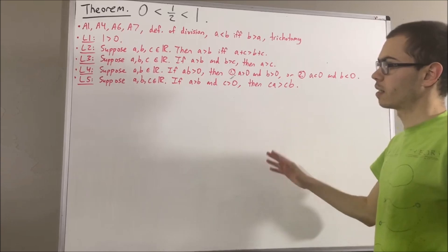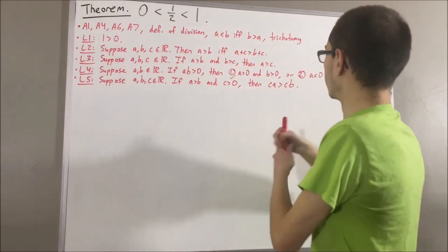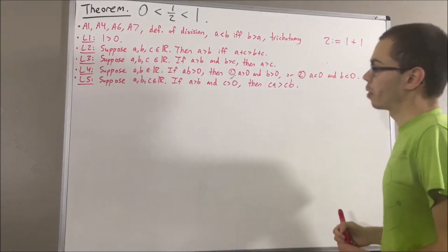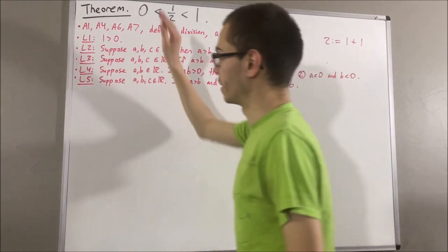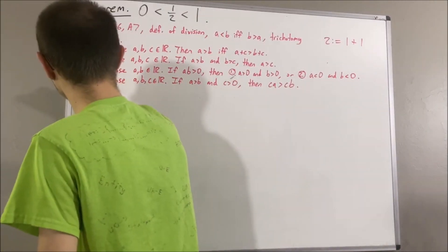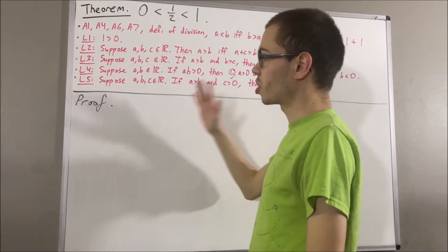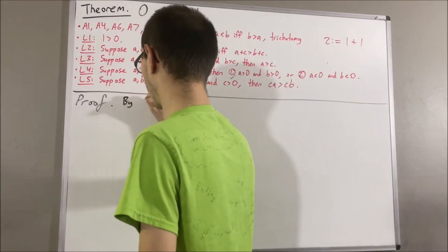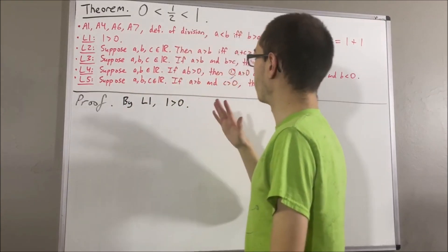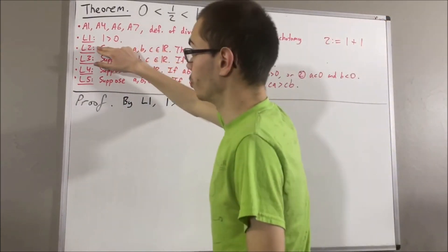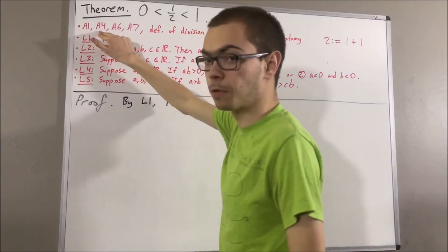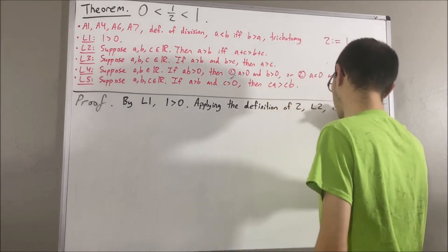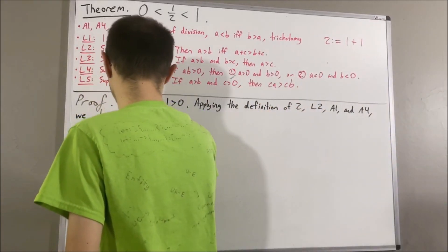Our definition of 2 is that 2 is defined to be 1 plus 1. To start the proof, let's first note by L1 that 1 is greater than 0. Then applying the definition of 2, L2, axiom 1, and axiom 4, we have the following.